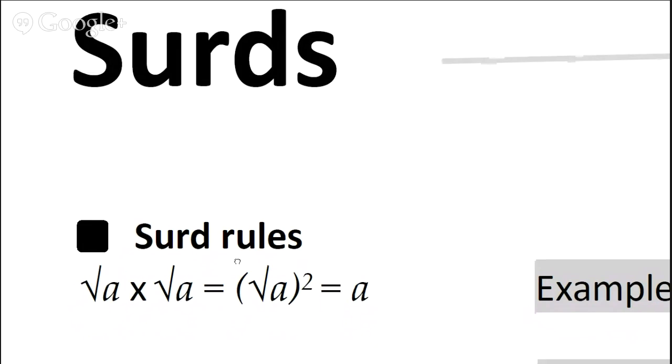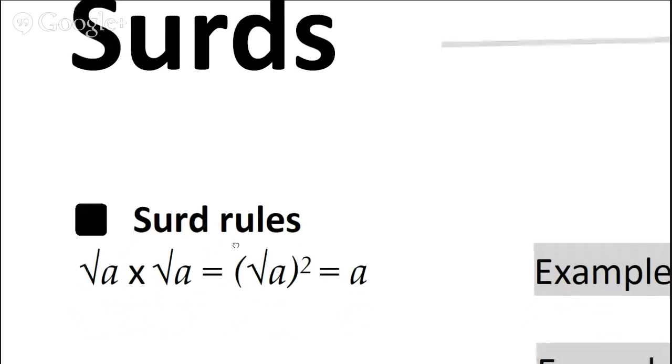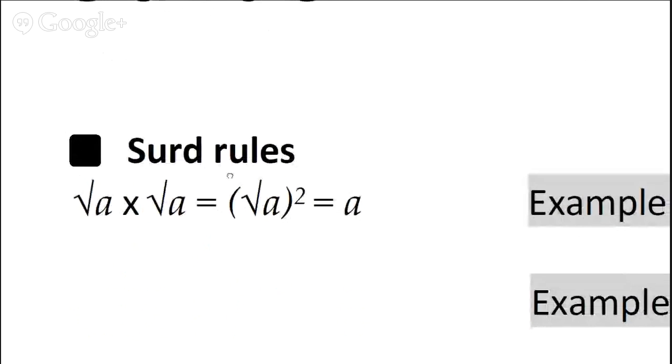Let's start going through the surd rules. The first of which is: square root of a times square root of a is the same as saying the square root of a squared, because if you times something by itself, you're squaring it.